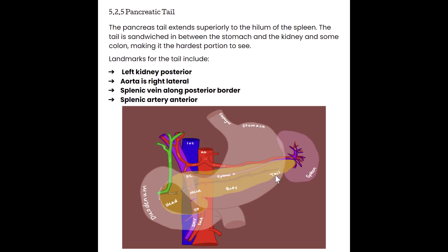If you haven't noticed the pattern yet, the pancreas is a very hard organ to see by ultrasound. Looking at some of the landmarks for the tail — we're going to see the kidney posterior to it, the aorta more towards the patient's right. The splenic vein is probably our most prominent landmark, coursing along the posterior border. It comes out of the spleen, kind of wraps around the tail and up towards the portal confluence.